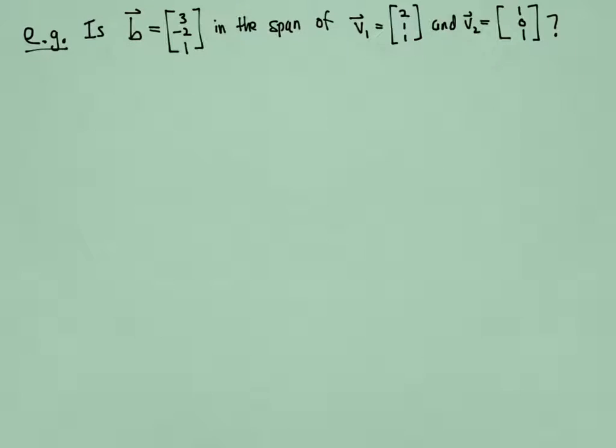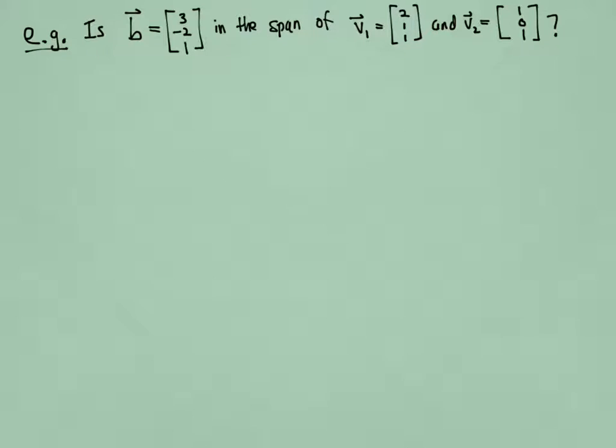Let's do it now with a specific example. Let's take B to be the vector [3, -2, 1] and ask whether it's in the span of these two vectors, V1 and V2.